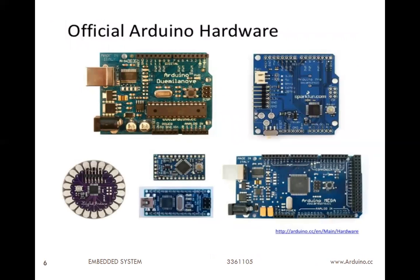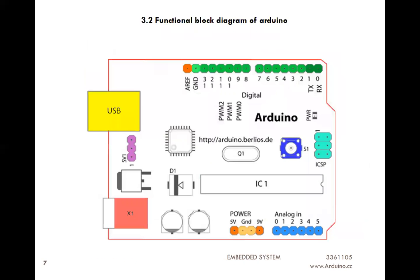Official Arduino boards: as shown in the figure, the following boards are easily available in the market — Arduino Uno, Arduino Mega, Arduino Nano, Mini, and many more boards are available. You can also visit the official website www.arduino.cc where you can purchase boards and access them.